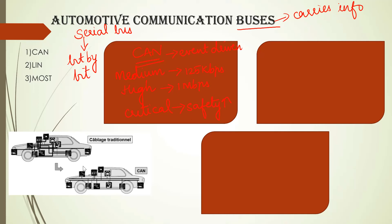CAN is used for critical applications and safety needs — you can use it for ABS. The protocol is so structured that the number of wires is reduced and complexity is reduced, so the response is very fast. In the traditional method you have a lot of wires in the car, but when you use CAN that complexity is reduced. To summarize: CAN means Controller Area Network.